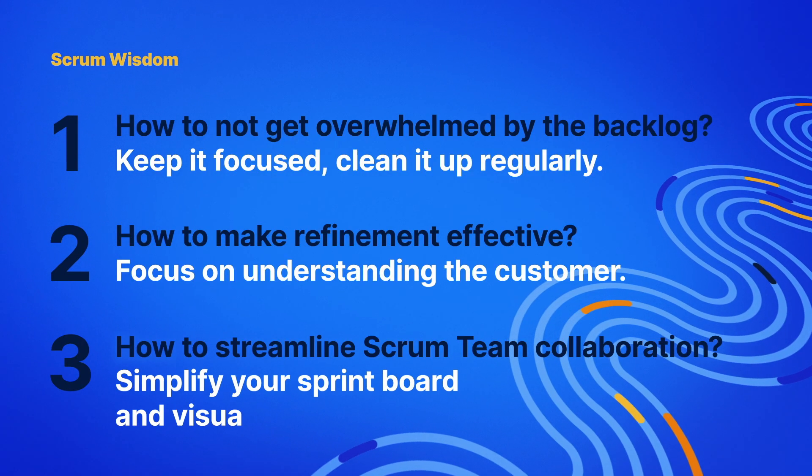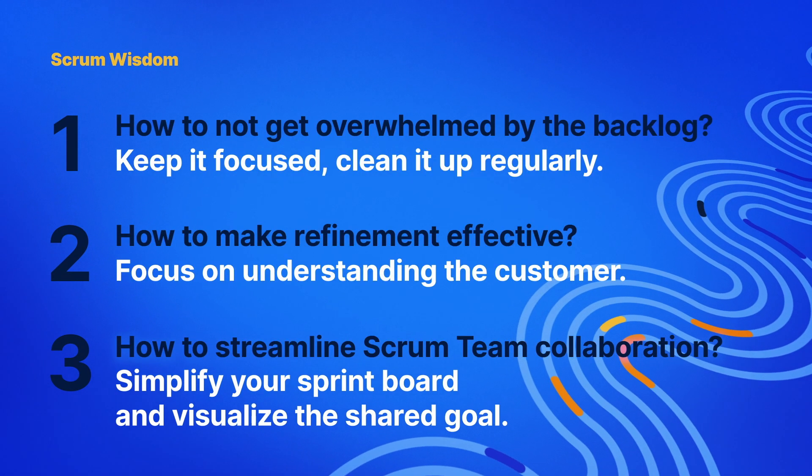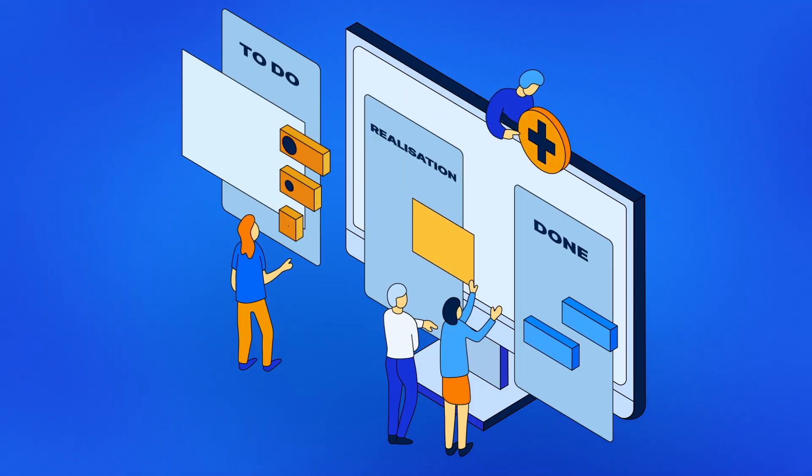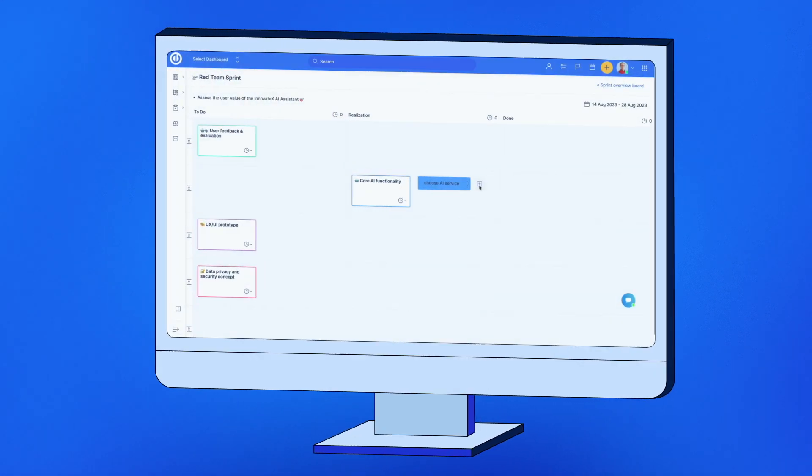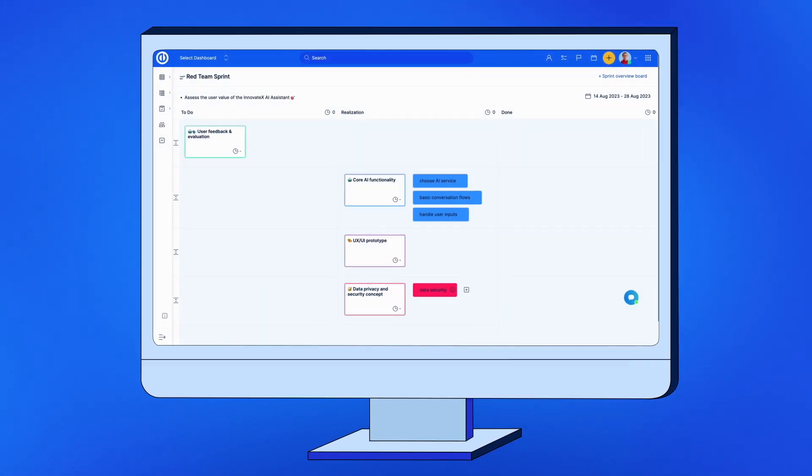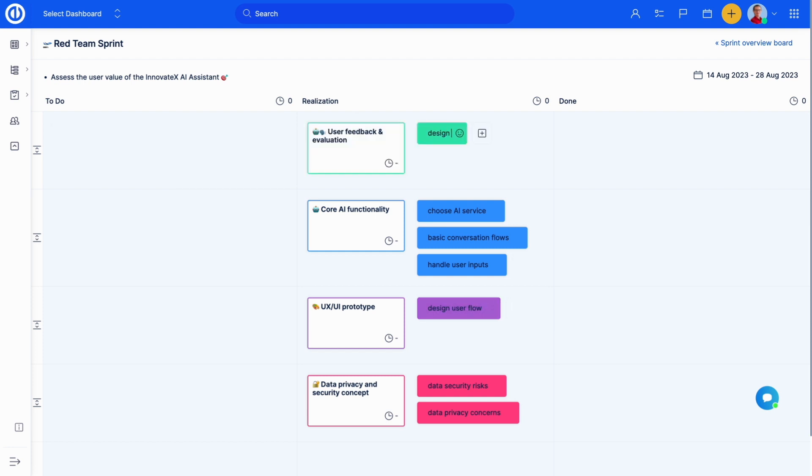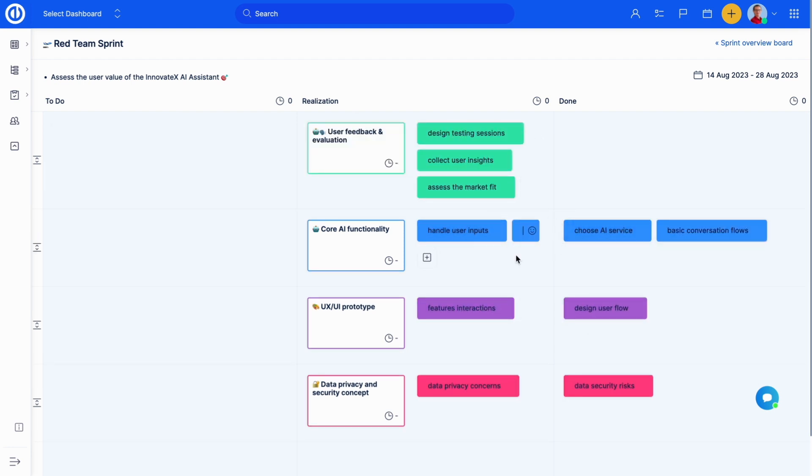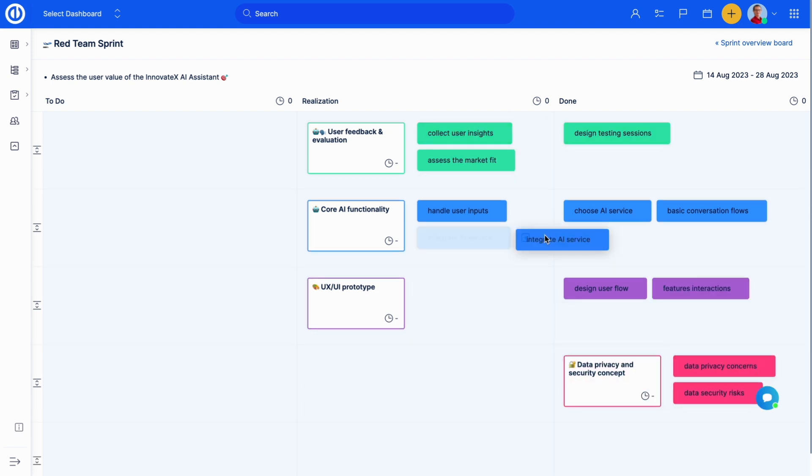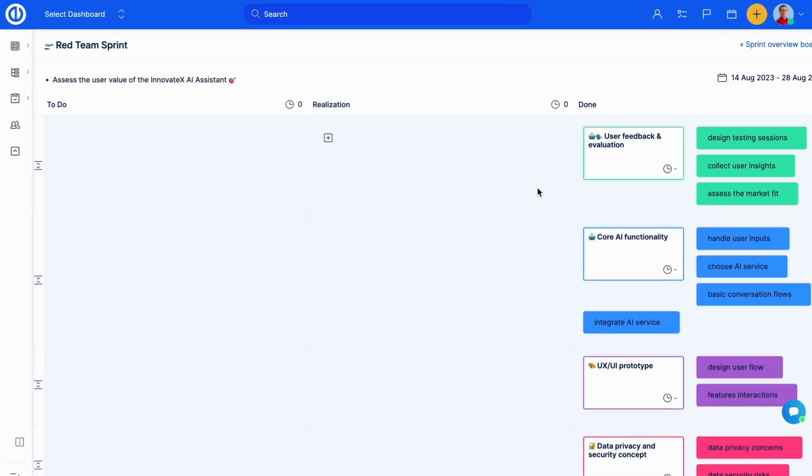Simplify your sprint board and visualize the shared goal. Scrum boards in Easy Redmine 13 are designed to let you focus on the work, not the columns. With its streamlined structure, they make it easy to organize backlog items, put them to realization, and track progress all in one place. This promotes team collaboration and helps you achieve your goals more efficiently.